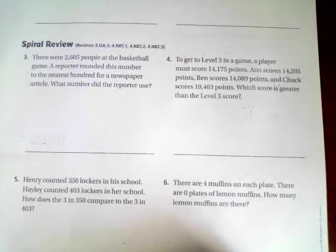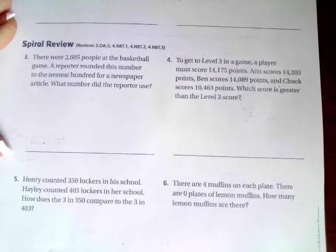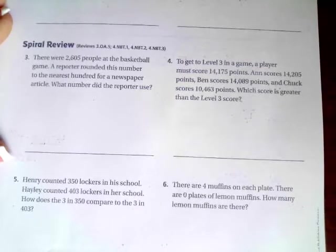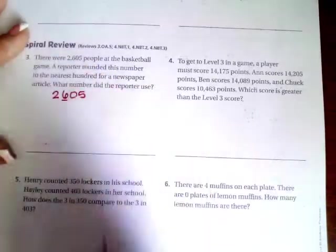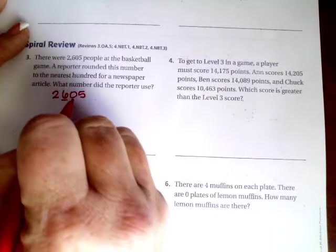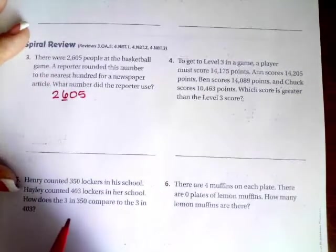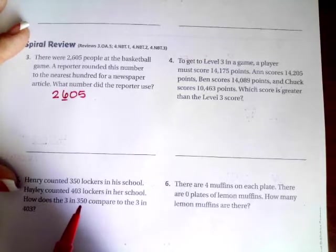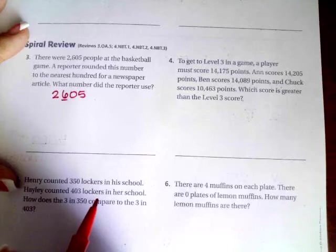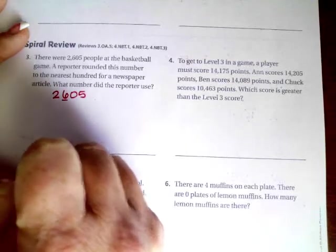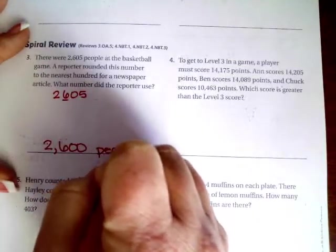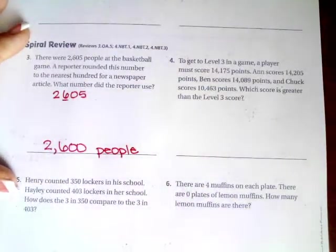We're gonna go over onto the back where you guys are gonna do the lesson check, just like always. We're gonna go down and do the spiral review. There were two thousand six hundred and five people at the basketball game. A reporter rounded this number to the nearest hundred for the newspaper. So two thousand six hundred and five, and we want it rounded to the nearest hundred. Remember, if this number is a zero, one, two, three, or four, it's going to stay the same at six. If it is a five, six, seven, eight, or nine, that six is going to go up to a seven. The number is a zero, so it's going to stay the same. We're going to write people because word problem, word answer.